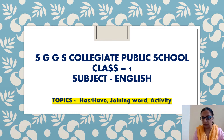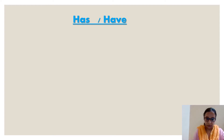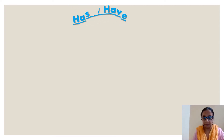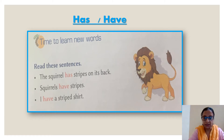Our first topic today is has and have, and this is in your tamarind book in chapter number seven. So let's begin. Has, have — time to learn new words. Let's read these sentences.